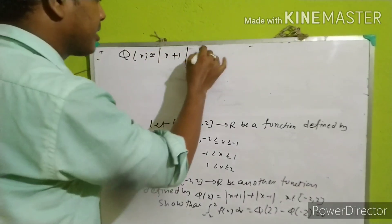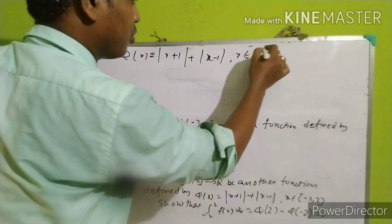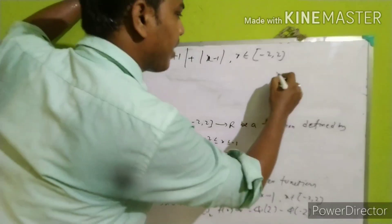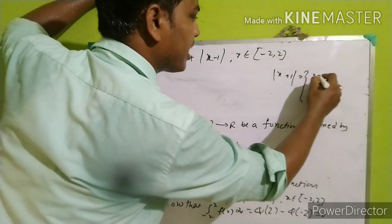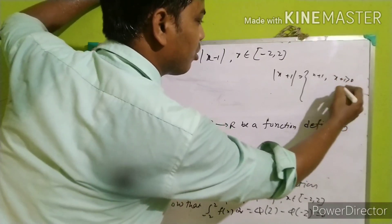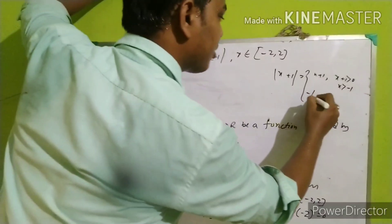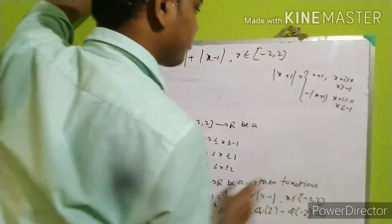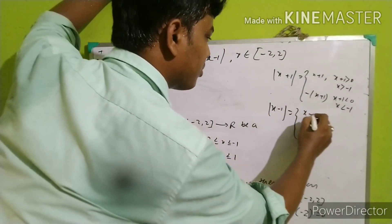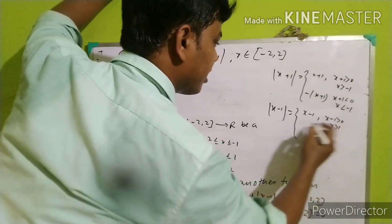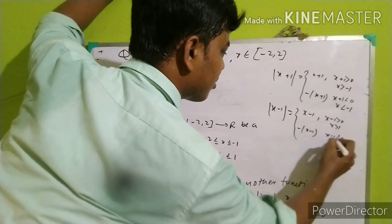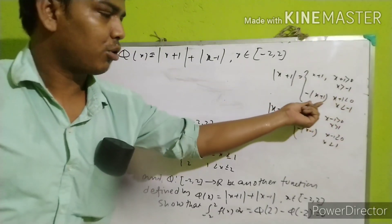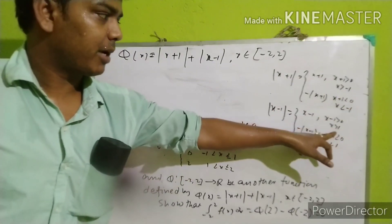The function phi of x equals mod of x plus 1 plus mod of x minus 1, for x belonging to closed interval [-2, 2]. For mod of x plus 1: x plus 1 is positive when x is greater than minus 1, and minus of x plus 1 when x plus 1 is less than zero, that is x less than minus 1. For mod of x minus 1: x minus 1 is negative when x is less than 1.